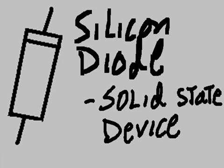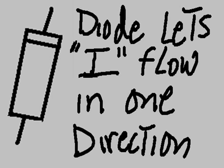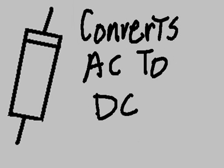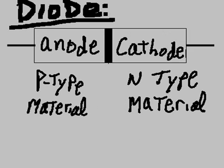A silicon diode is a solid-state device. The diode lets current flow in one direction and converts AC to DC. Here's a diode — anode on the left side, cathode on the right side. To remember which is which: cats chase ants — cathode, anode. Black is negative, red is positive.